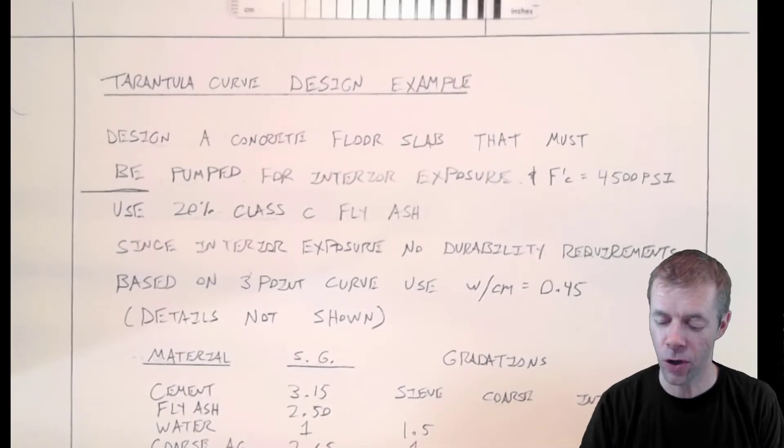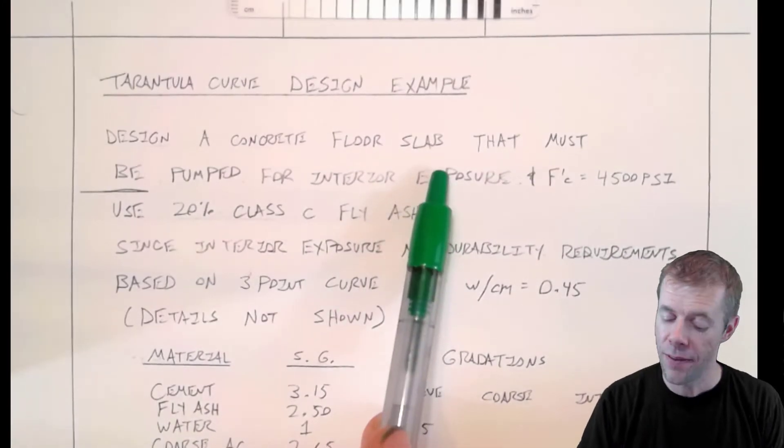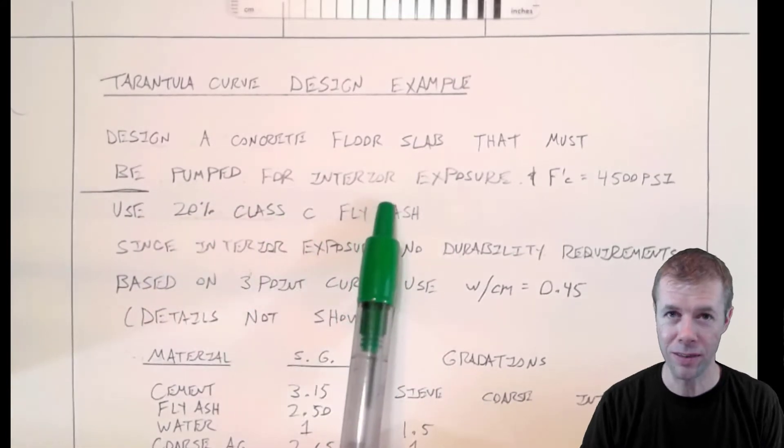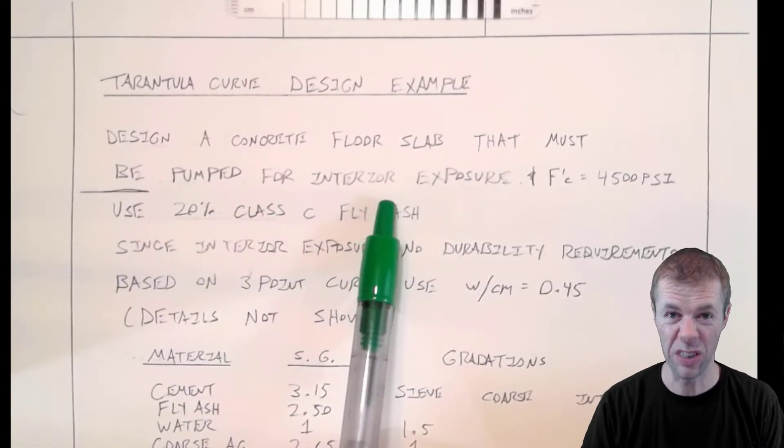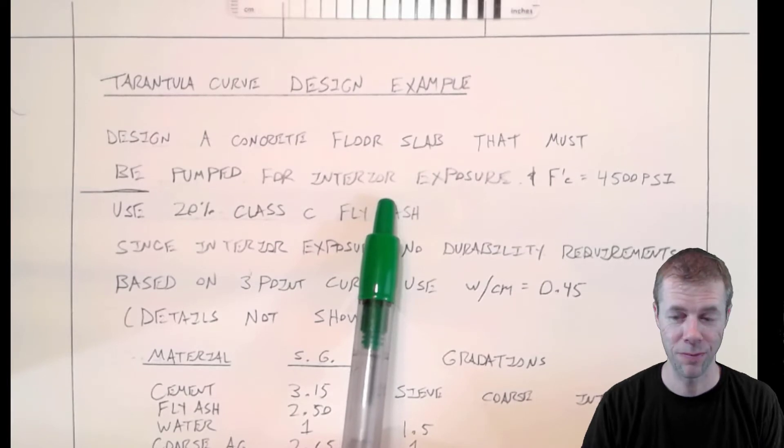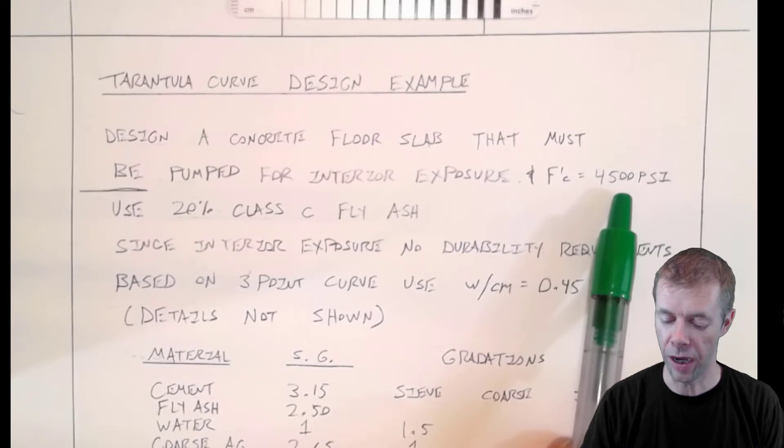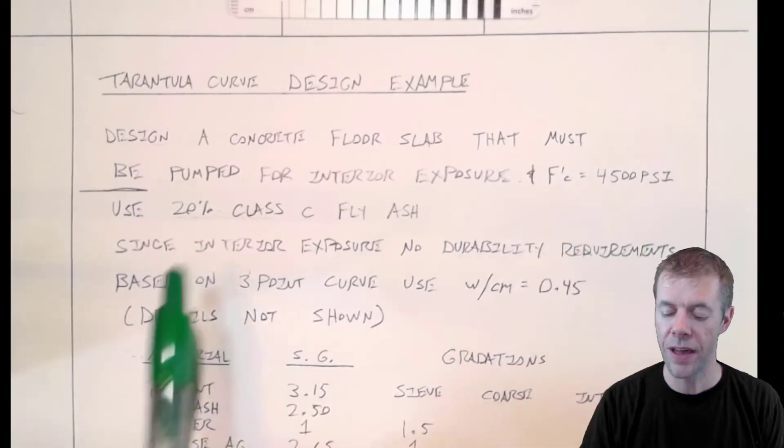Here's the example problem. We're going to design a concrete floor slab that must be pumped for interior exposure. That means it doesn't have durability issues. It's inside of a building. Design strength is 4,500 PSI. That's all it's given.